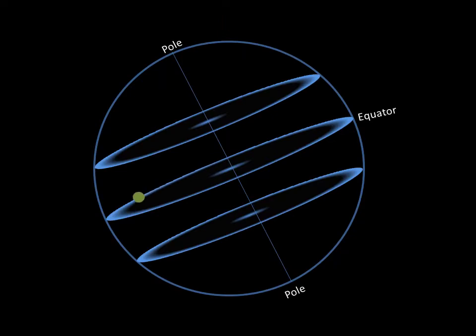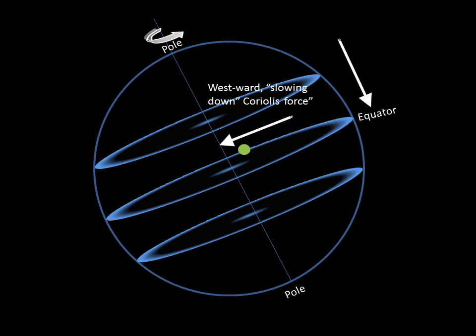A moving mass of air deflects to east as it moves from lower latitude to higher latitude. The moving mass sees deflection towards west as it moves from higher latitude to lower latitude.